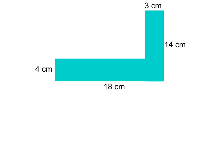We have another complex figure where the first step is to figure out the missing side lengths. There are two missing side lengths. For the first missing side: part of the way plus 3 gives us 18, so something plus 3 equals 18, meaning that missing side length is 15 centimeters.